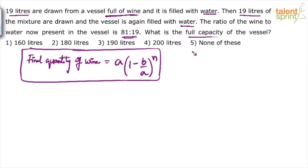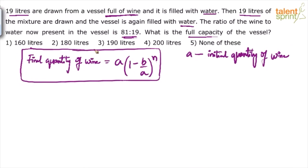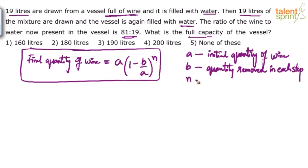Let me explain what a, b, and n are. 'a' is the initial quantity of wine — it could be wine, alcohol, milk, anything. Initially we start with only one item, and we find the final quantity of that item after doing this operation a number of times. 'b' is the quantity removed in each step — here we are removing 19 liters, so b equals 19. 'n' is the number of operations.